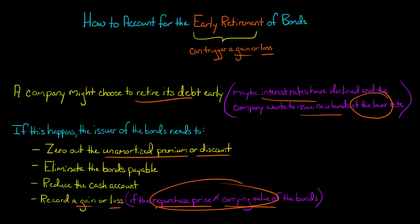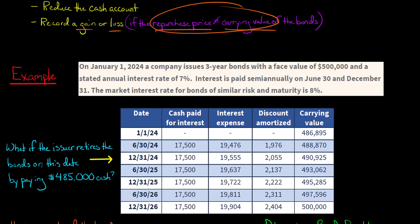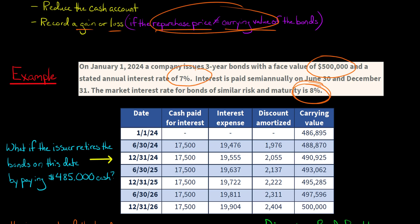Let's jump into an example. A company issues three-year bonds that pay interest semi-annually with a face value of $500,000. The stated interest rate is 7% annually, so we divide by two for semi-annual interest payments of $17,500 every six months. The market rate is 8%. Because the stated rate is lower than the market rate, the bonds are issued at a discount — specifically $486,895 is what the borrower initially receives.